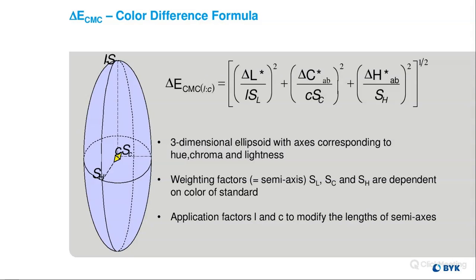Next question: do you know of any work being done on color equations for metallics? I think next week we have a presentation going over some of the metallic difference equations — they get very advanced because some take into account sparkle and graininess values at different angles, which is a lot more advanced than regular solid colors. I don't know if there's any new work being done, but I know one was recently released. I did just throw the link to register for that in the chat — it's titled 'Benefits of Delta E Combined for Auto-like Finishes.' Even if you can't attend, just register and you'll get the recording link in your email.